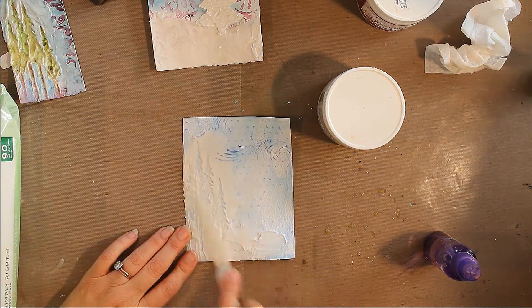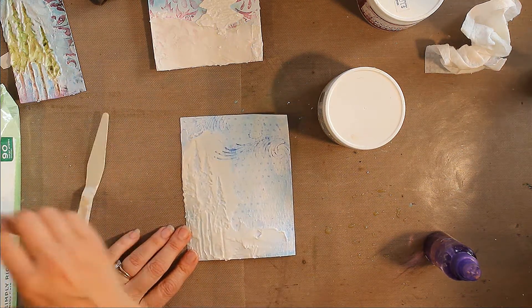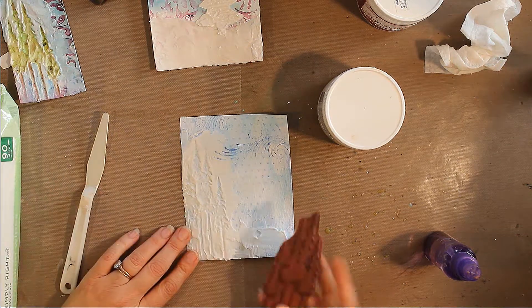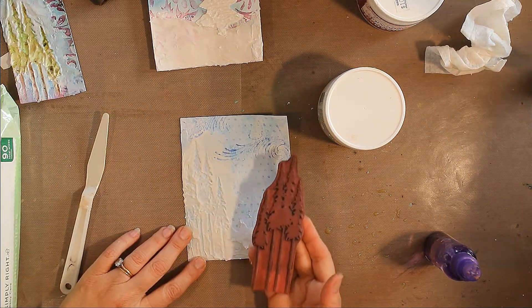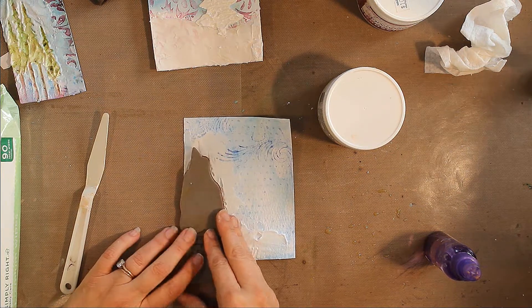Now the technique that we just used with our embossing paste and stamp is what I've already done here. I just put some embossing paste down on my page while it was still wet. I took my tree stamp, spritzed it, put it into my embossing paste.